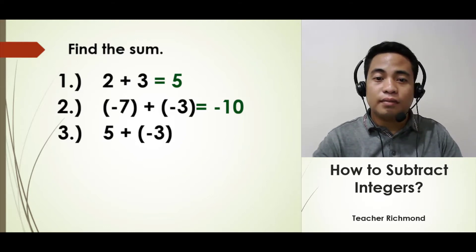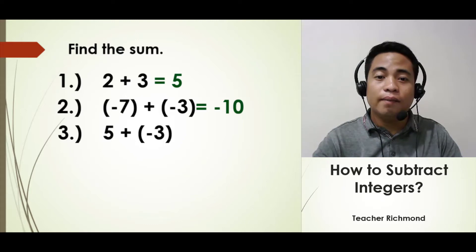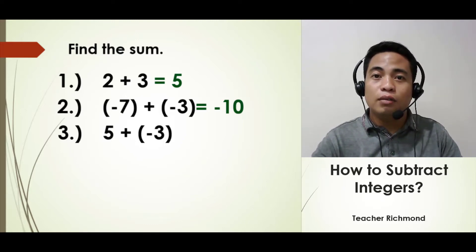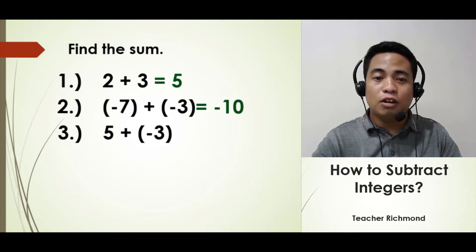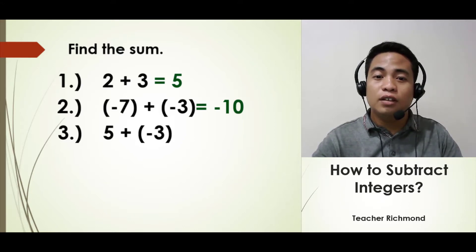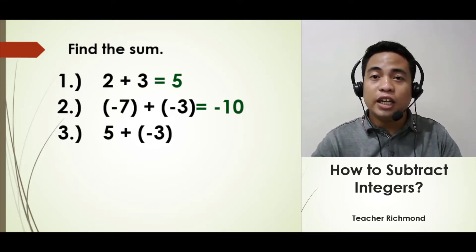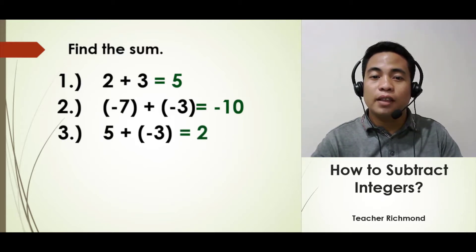The next example: positive 5 plus negative 3. They don't have the same sign — 5 is positive and the other integer is negative. In this case you just get the difference of both integers and copy the sign of the integer with the greater value. The difference between 5 and 3 is 2. Which integer has a greater value? It is 5. So the sign of your answer is positive because 5 is positive.